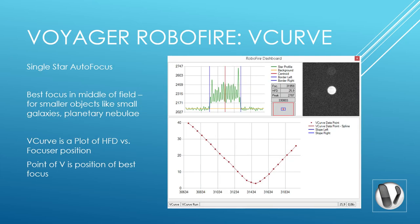What is a v-curve? It is a plot of HFD versus focuser position. HFD — half-flux diameter — is the width of the star at the point where the brightness is half the maximum value. Voyager determines this v-curve by moving the focuser back and forth, taking many pictures, and measuring the HFD at each position. Right at the bottom of the v, that is the critical focus zone — the point where your focus is best. Voyager uses this data to determine the slope of the left and right sides of the v.